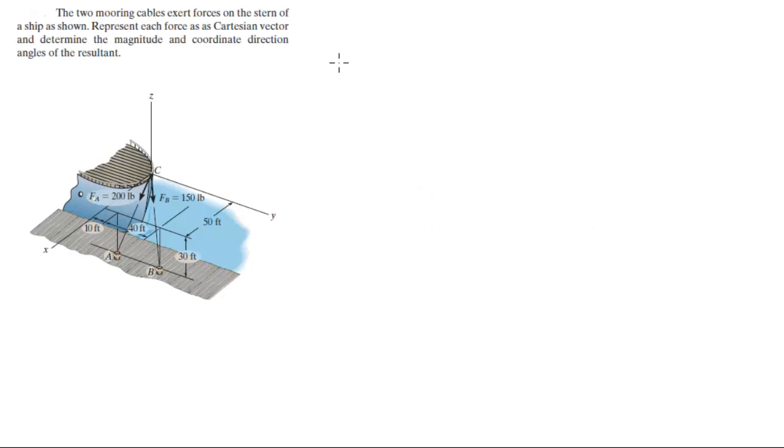Alright guys, let's do this problem that says the two mooring cables exert forces on the stern of the ship as shown. Represent each force as a Cartesian vector and then find the magnitude and direction angles of the resultant force.